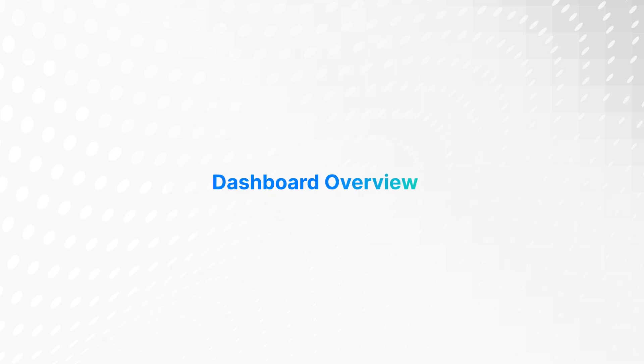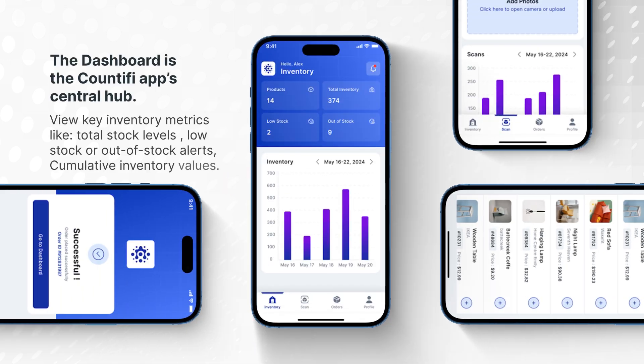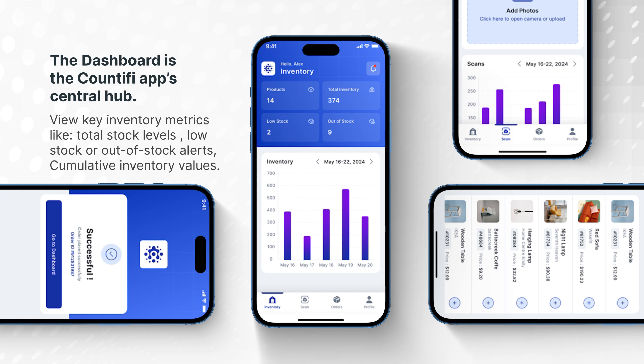Dashboard overview. The dashboard is the Countify app's central hub, where you can view key inventory metrics like total stock levels, low stock or out-of-stock alerts, and cumulative inventory values. You can also access basic account information and manage settings based on your industry needs or user permissions.